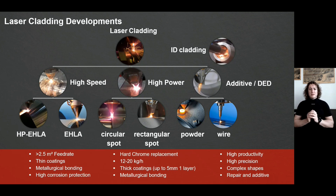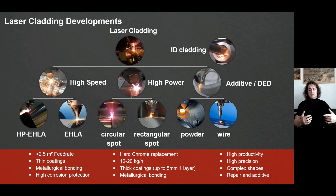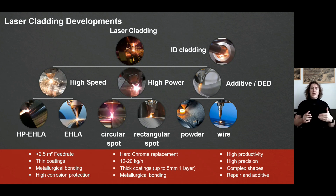On the left side we have the so-called high speed process. This process is slightly different — for rotation symmetrical bodies it enables the production of thin coatings under extremely fast deposition conditions. We can rotate parts at speeds between 100 and 200 meters per minute, while producing thin coatings with incredibly good surface roughness that still maintain metallurgical bonding.